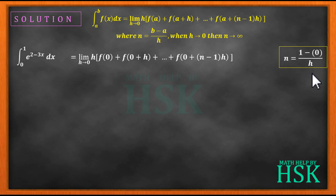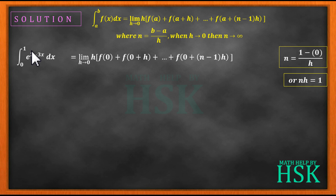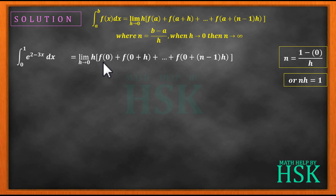Here n is equal to 1 minus 0 upon h, or I can write nh is equal to 1, because n equals b minus a upon h, where b is the upper limit and a is the lower limit. Now to solve this limit, first I have to calculate the total.